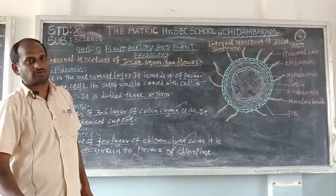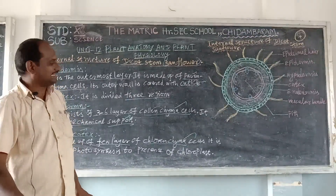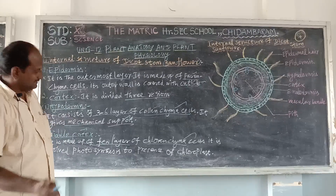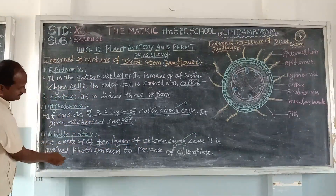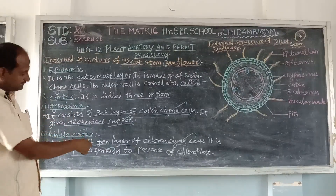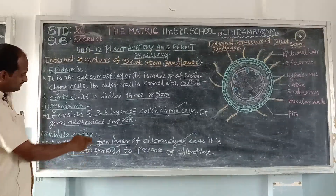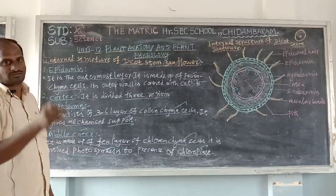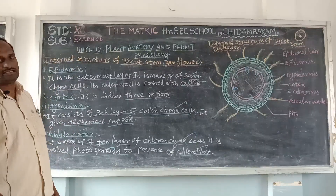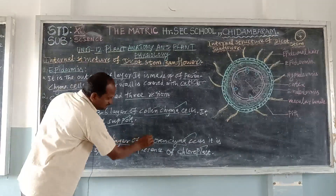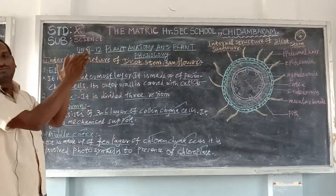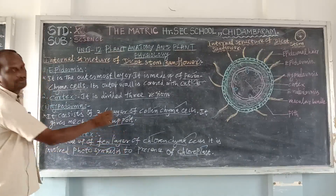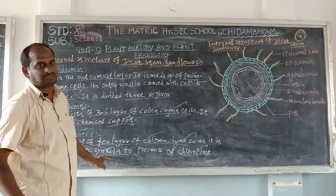Chlorenchyma means it stores chlorophyll. Chlorophyll makes the plant green in color. In leaves and the stem, the presence of chlorenchyma cells means they are involved in photosynthesis. Chlorenchyma cells contain chloroplasts, which are found in each and every part of leaves and the stem. Chlorenchyma is present and functions to store the chloroplast.